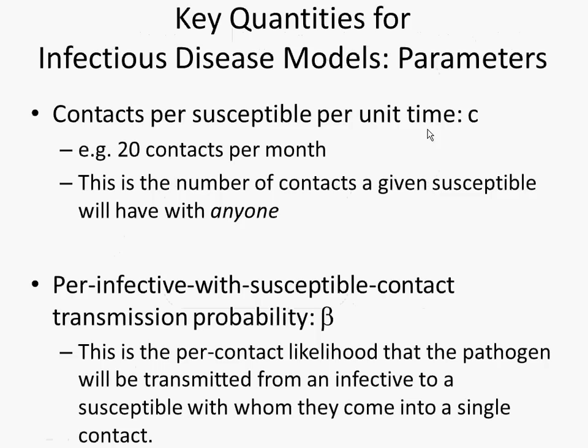The first parameter is C, the number of contacts per person per unit time. This is assumed to be similar in character across people — a mean number of contacts a person will have per month, per day, or per year depending on your unit of time. Importantly, this is the number of contacts a given susceptible will have with anyone per unit time — it could be with an infective, with a susceptible, with a recovered person, or a vaccinated person.